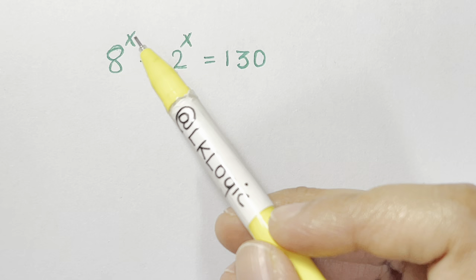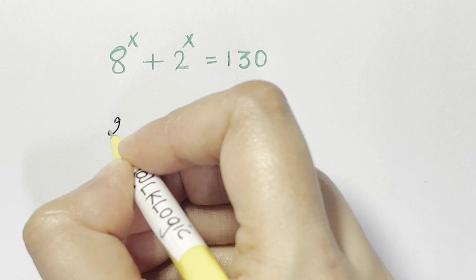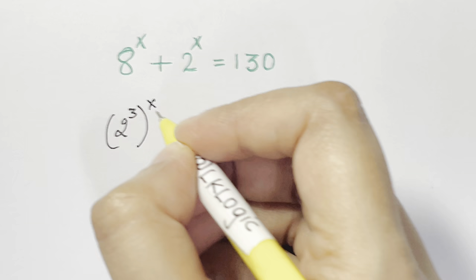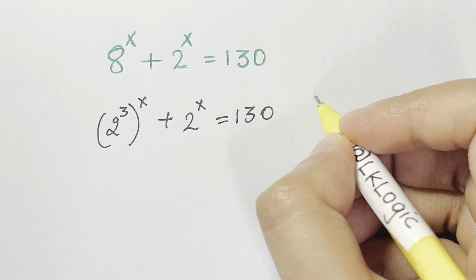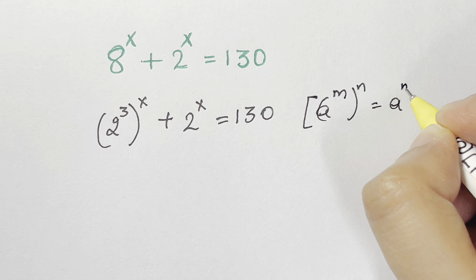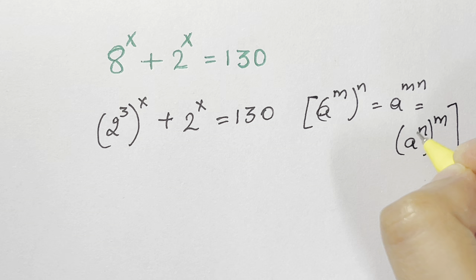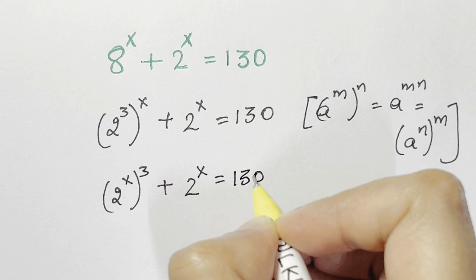We have a nice exponential and algebraic equation to solve. We have 8 to the power of x, and I can convert 8 into 2 cubed. So we get 2 cubed whole to the power of x plus 2 to the power of x equals 130. Using the law a to the power of m whole to the power of n equals a to the power of mn, I can reshuffle this to get 2 to the power of x whole to the power of 3 plus 2 to the power of x equals 130.